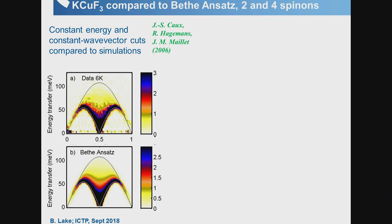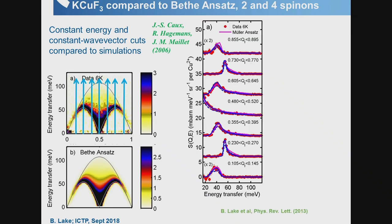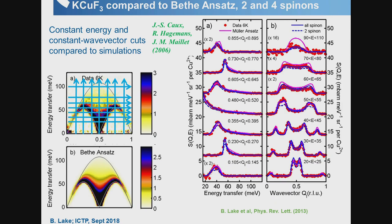Color plots don't show full detail, so cuts through the data at constant wave vectors, plotted as a function of energy (red points), are compared to the theory of Caux (solid blue line), the Müller ansatz (pink line), and Caux's theory without accounting for all scattering events (dotted line). Cuts at constant energy show two peaks dispersing apart at low energy and one broad feature at the top, and the accurate theory — the solid blue line — fits best.